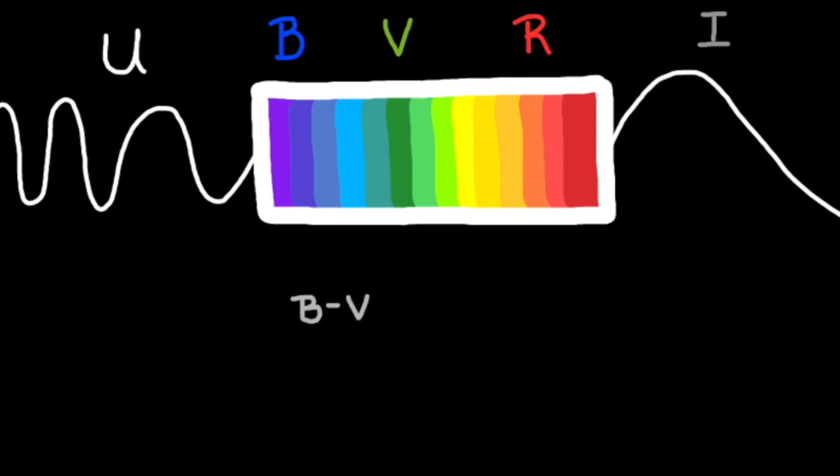B minus V is the most commonly used color index, partially because it's a good indicator of temperature, and partially because sensors have been historically constructed to be more sensitive to blue light. But you can choose to describe a star's color through any set of filters. The key is making sure you document your methodology well to ensure it is easily interpretable.